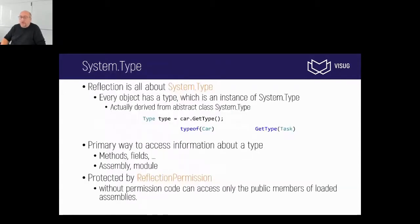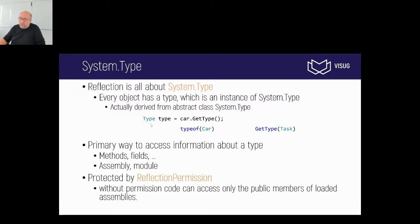Typically, what we do first is ask for the type using the Type type. Once we have it, we can access all the methods, fields, and properties. Reflection is pretty powerful, and if you want you can disable it by disabling the reflection permission — but since I want to use reflection, we're not going to cover that part.